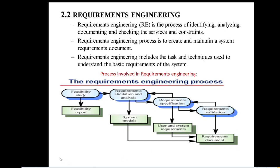The next topic is requirement engineering, where we collect all the requirements from the user. It is the initial stage of software engineering. After collecting requirements, we create a document. Requirement engineering is a process to create and maintain system requirement documents. It is the process of identifying, analyzing, documenting, and checking the services and constraints. We follow some steps to create the document.